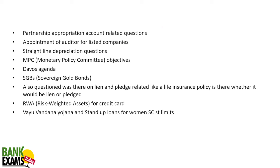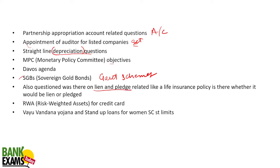There was a question on the partnership appropriation account — a basic accounts question. Appointment of auditors of listed companies came from the Companies Act. Straight-line depreciation method appeared from the depreciation topic. Basic MPC objectives and Davos agenda were general awareness questions. Sovereign gold bond — a government scheme we have covered — also appeared. Questions on lien and pledge, specifically the difference between the two, were asked. Risk-weighted assets for credit cards — an RBI circular topic — also featured.